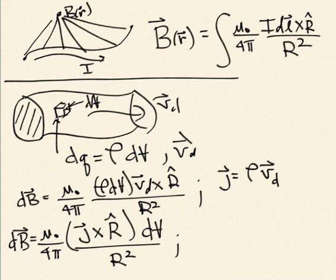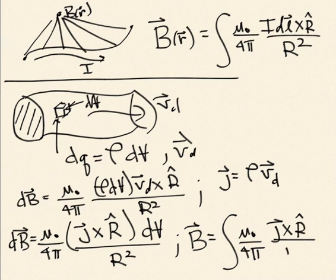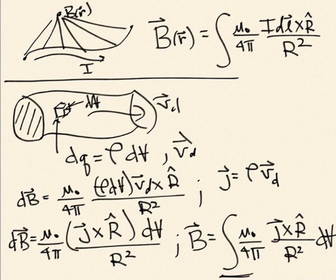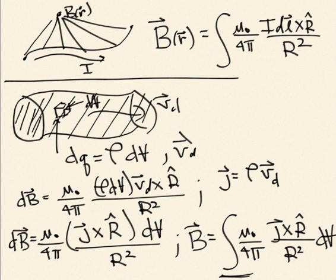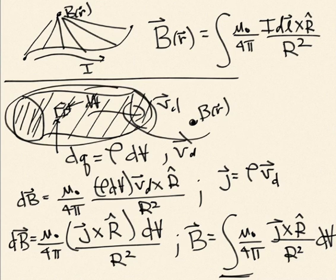The total magnetic field is then B = ∫ μ₀/4π × J × R̂ / R² dV, integrating over the volume — in practice a triple integral over dx dy dz. This applies to any volumetric distribution of moving charge, for example the liquid metal in Earth's core generating Earth's magnetic field via the dynamo effect, if you knew the current density J everywhere inside.